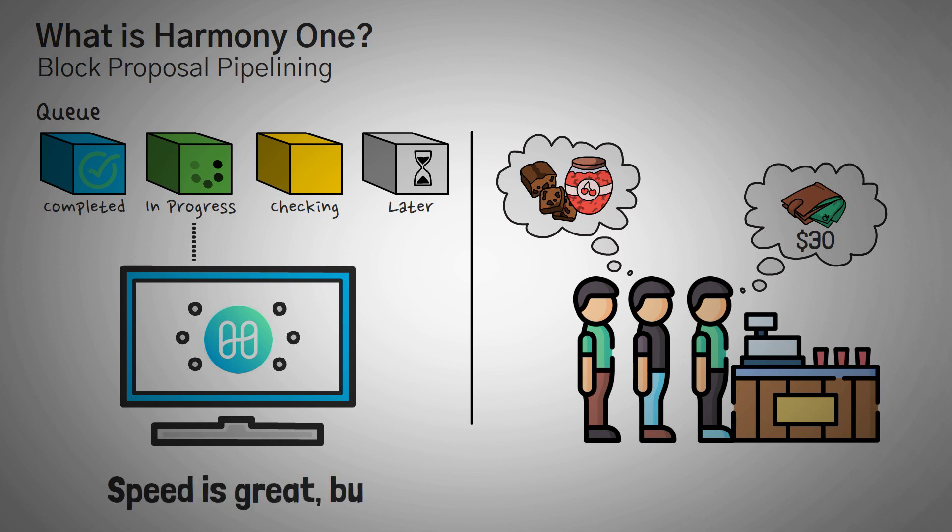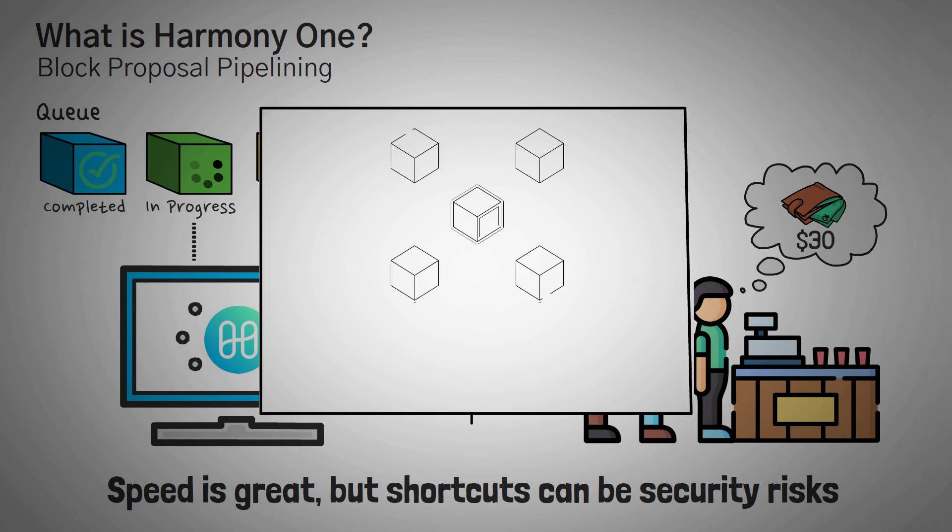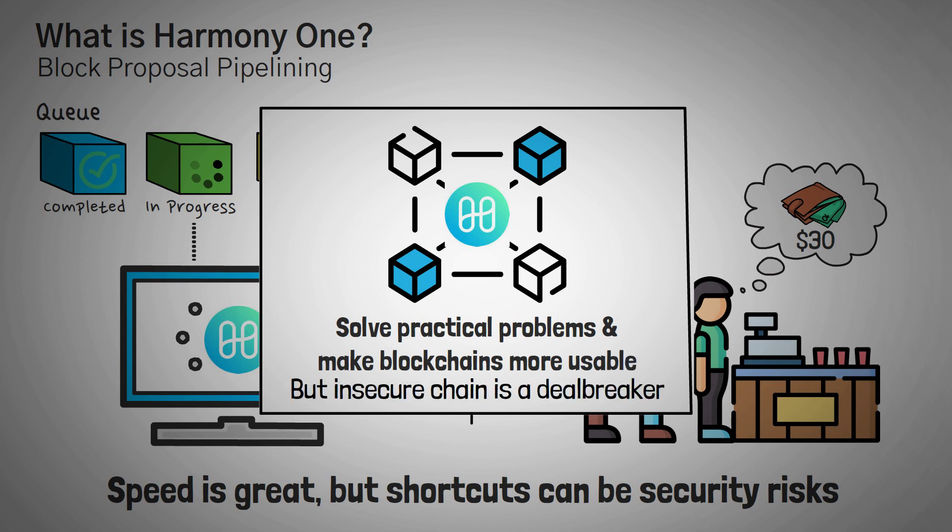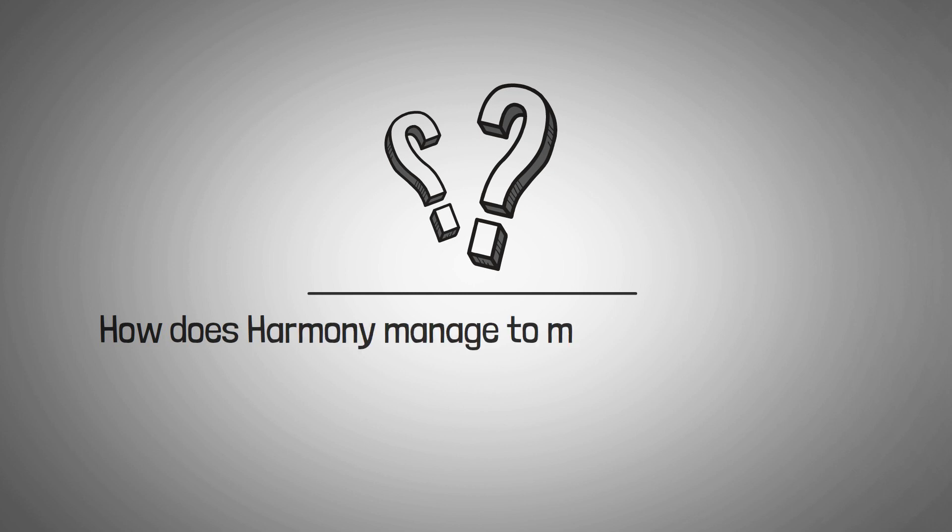We know that speed is great, but usually it takes some shortcuts that can potentially be seen as security risks. Remember, the idea of Harmony is to solve practical problems and make blockchains more usable, and an insecure chain is a deal breaker for the average person.